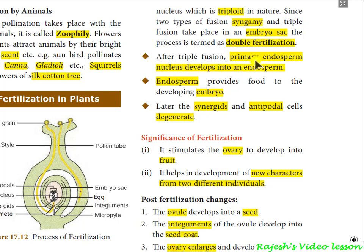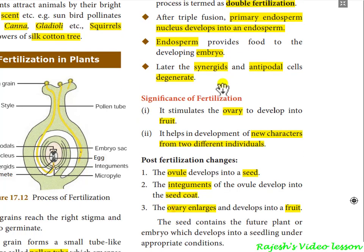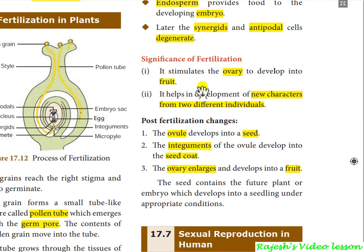So the first fertilization is the fusion of the egg with one sperm, and the second is the fusion of the primary endosperm cell with the other sperm. Afterwards, the synergids and antipodal cells will be degenerated.